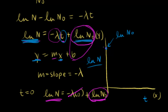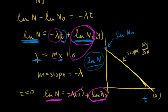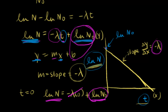We have a negative slope, so the line goes downward. The slope, which is change in y over change in x, equals negative lambda. This is a semi-log plot because we have the natural log on one axis versus time on the other. It's just another way to look at the data. You can find the slope of this straight line, take the negative of it to get your decay constant, and then from the decay constant get your half-life.